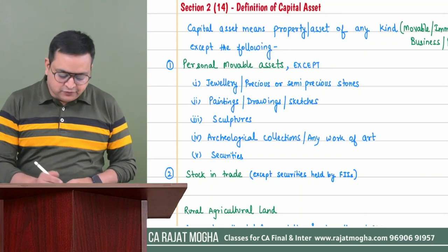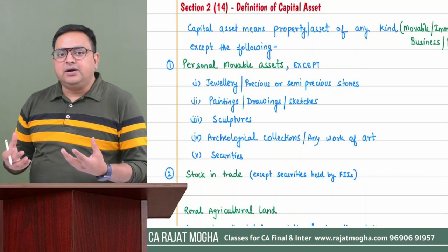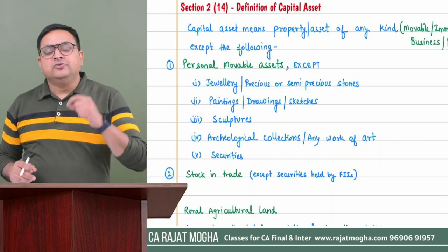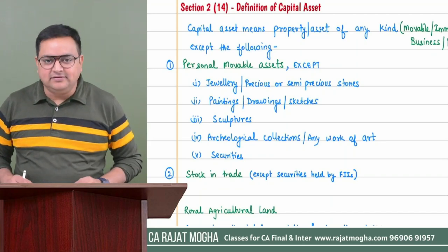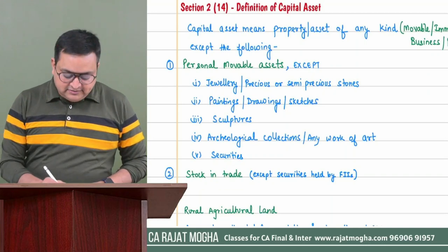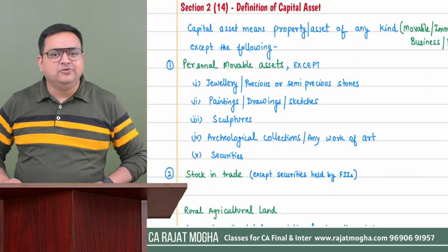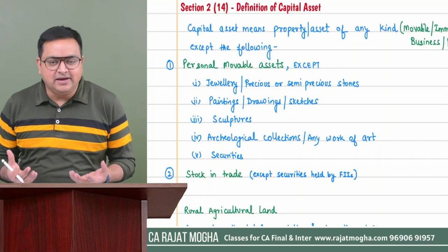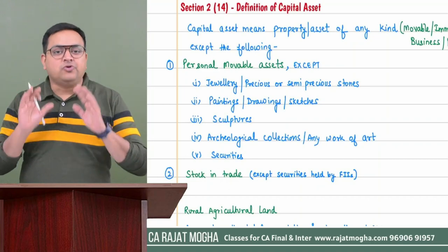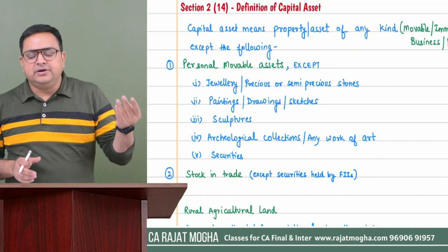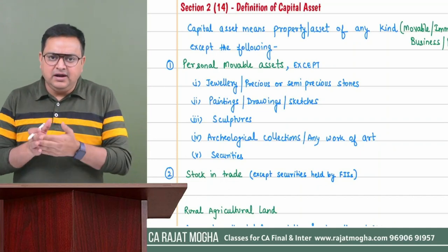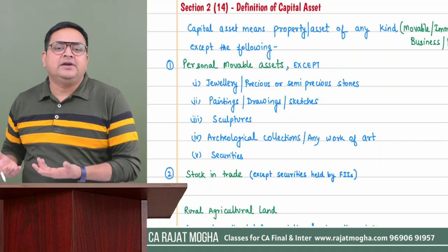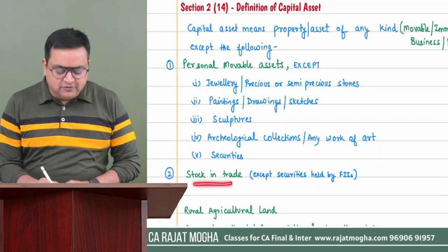So securities, jewelry, precious stones, paintings, sculptures — even if personal — will be treated as capital assets, and capital gain will arise on their transfer. Stock in trade, however, is not a capital asset. If we sell stock in trade, that would be PGBP income. For example, if a jeweler is selling gold jewelry as stock in trade, that would be PGBP income, not capital gain.